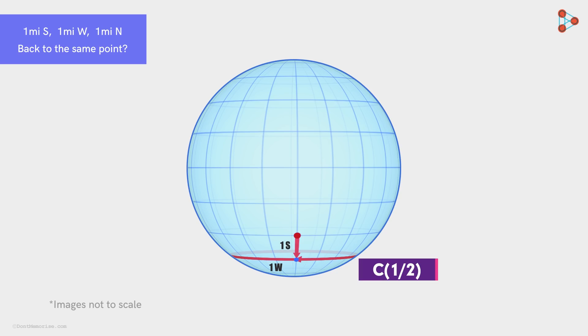And then we travel one mile north to reach the same point where we started. Now, if we take any point in the circle one mile north of this circle, we will see that it is a valid solution to the puzzle. Again, infinite points.